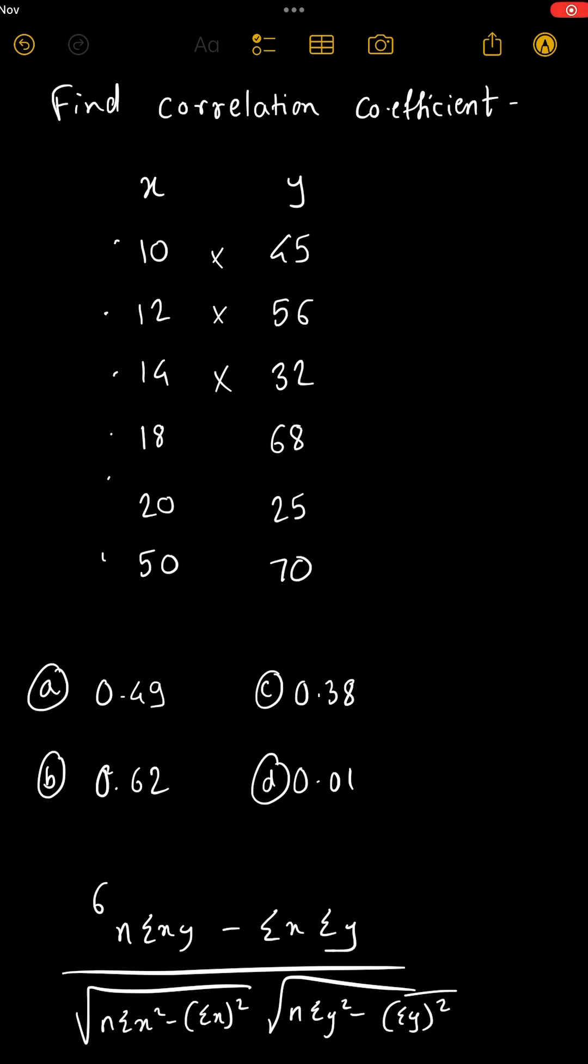So 10 into 45 m plus, that is added to your memory, 12 into 56 m plus, 14 into 32 m plus, similarly do it for all the pairs.